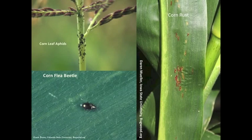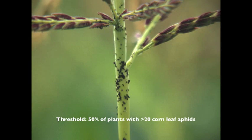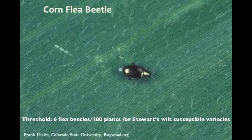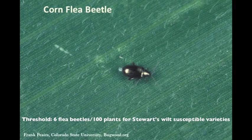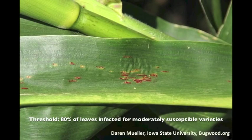To simplify this example, we focused on the worm pests. If you also found other pests, the thresholds are as follows. For corn leaf aphids, the threshold is 50% of plants having aphid colonies of 20 individuals or more. For flea beetles on sweet corn varieties susceptible to Stewart's wilt disease, the threshold is 6 flea beetles per 100 plants, or 0.06 beetles per plant. For corn rust on varieties that are moderately susceptible, the threshold is 80% of leaves infected with rust.